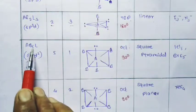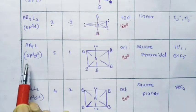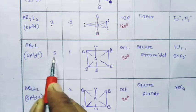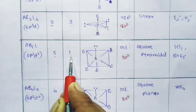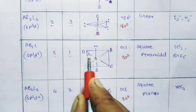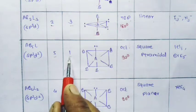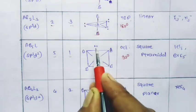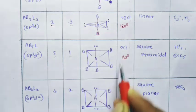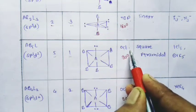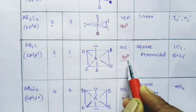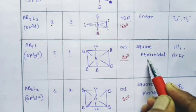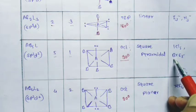For AB5L1 (SP3D2 hybridization): 5 bond pairs and 1 lone pair present. Total 6 electron pairs around the central atom. Geometry is octahedral; bond angle 90 degrees. Shape of this molecule is square pyramidal — examples: ICl5 and BrF5.